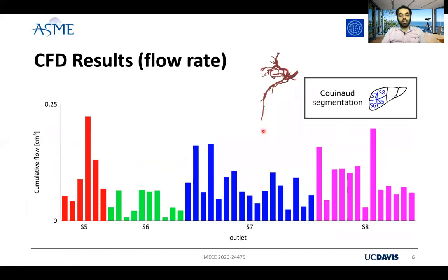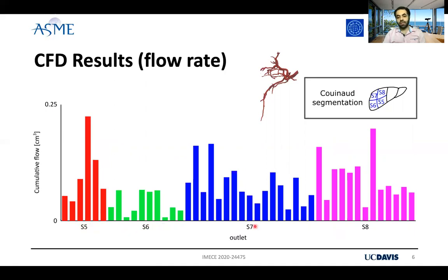Because of the small Stokes number for this case, we could assume that the particles — the microspheres — closely follow the blood flow streamlines. Therefore, the number of microspheres received at each outlet was proportional to the cumulative flow rate at that outlet. Here we are presenting the flow rate at the outlets that are feeding segment five, segment six, segment seven, and segment eight. Segment seven includes two more outlets.